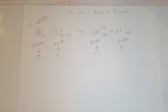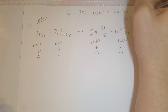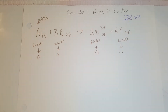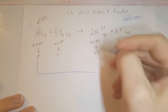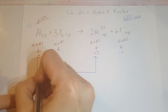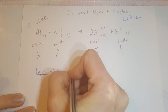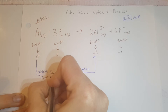You might remember from the reading: LEO GER. I usually just remember LEO — Loss of Electrons is Oxidation. This basically tells me if something is losing electrons, it's becoming less negative, so it's going to a higher number. Looking at aluminum, it was an oxidation number of zero, and now it's positive three, and that's because it's giving electrons away.